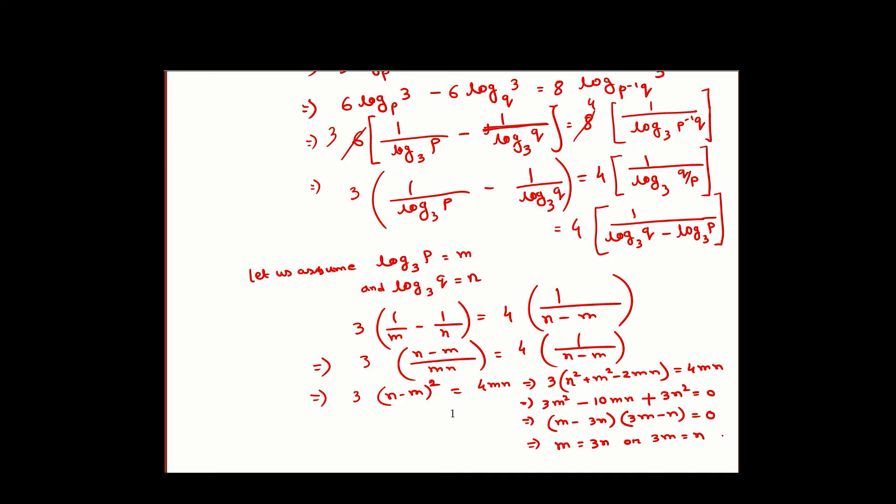Basically we get M equals 3N or 3M equals N. What are M and N? Let us substitute here. log_3(P) equals 3N, so 3 log_3(Q). It is giving us both sides we have log base 3 and it is Q cubed. Log is a one-one function, so we get P equals Q cubed.